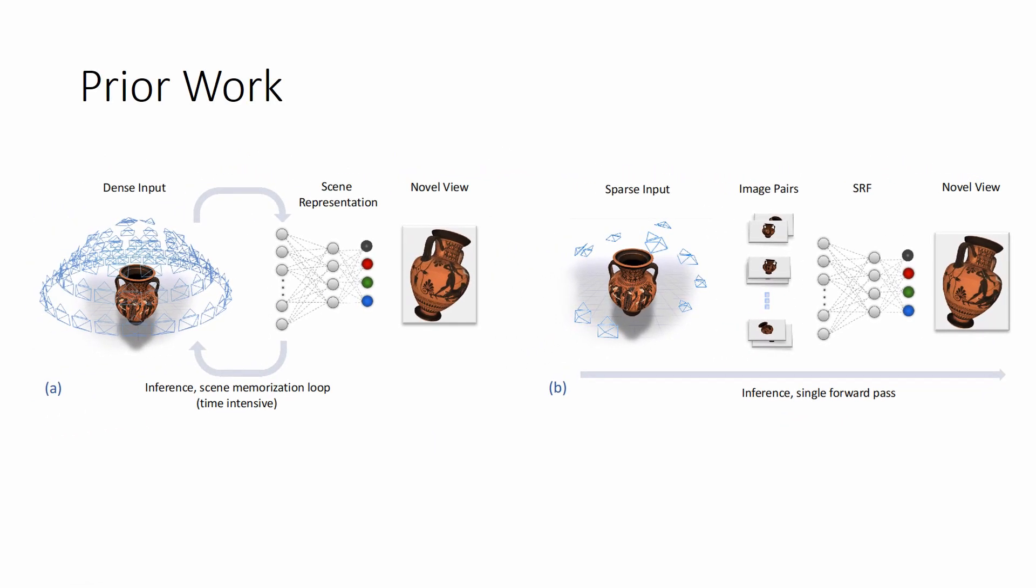Prior works like NeRF need typically 100 input images and need 3 days to memorize a single fixed scene into a neural network. Instead, our prediction is based only on a sparse number of views and we are predicting instantaneously in a single inference step. Moreover, our method generalizes to novel scenes.